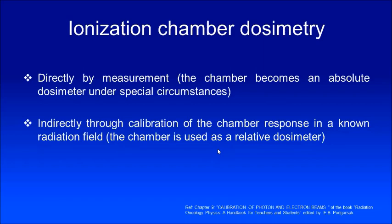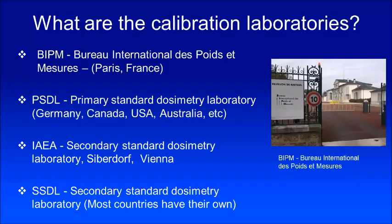Your ion chamber could either be an absolute dosimeter or a relative dosimeter — if it gives you directly the dose, then it is an absolute dosimeter; if it requires a calibration factor, then it is a relative dosimeter. How do you get these calibration factors? There are standard laboratories that can provide you the calibration factors under standard conditions. One is the BIPM in Paris, which is a standard laboratory not only for ion chamber measurement but for everything — for length, weight, and many other parameters.